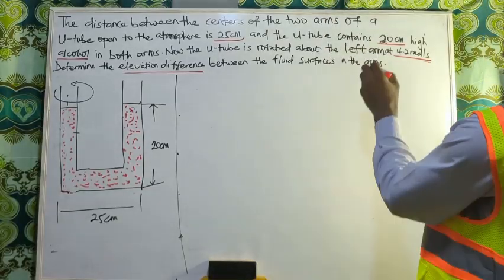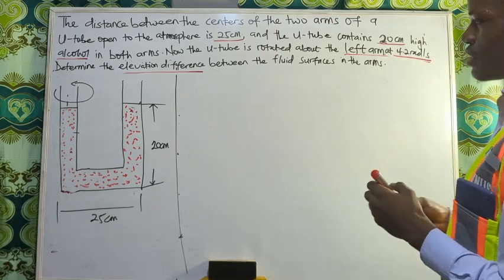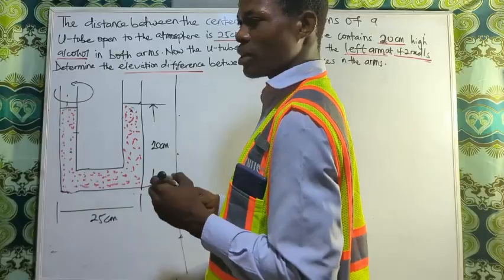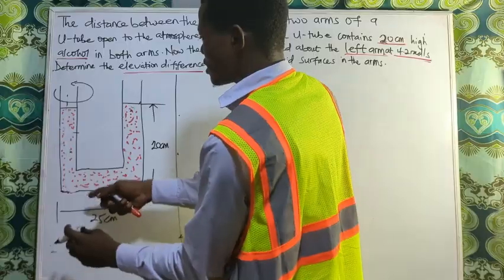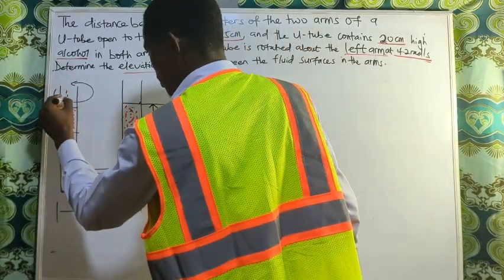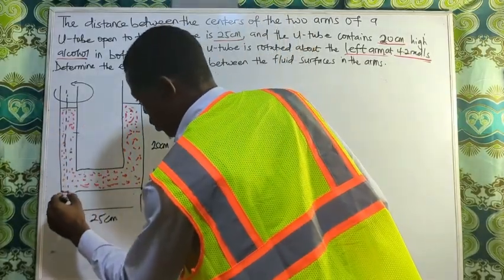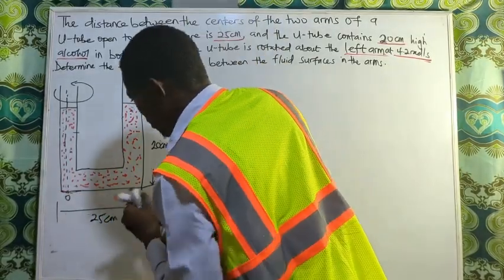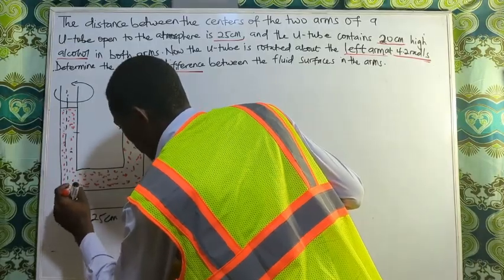They've given us key information that it was rotated about the left arm, so we can get some information from there. Since it was rotated about the left side, we can have our origin here at the left and also have our r at the bottom surface.